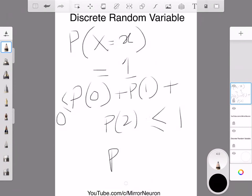So basically, the probability of all this should lie between 0 and 1, and the summation of all individual probabilities—the total probability cannot exceed beyond 0 and 1. So it should be within 0 and 1.